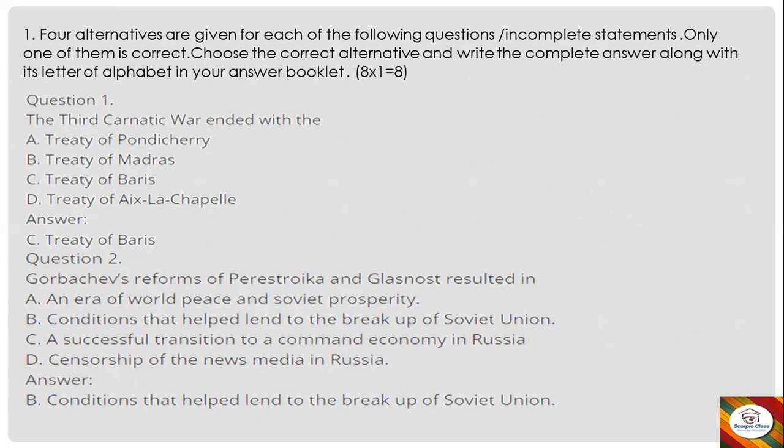The first section has multiple choice questions. Four alternatives are given for each question or incomplete statement; only one is correct. Choose the correct alternative and write the complete answer along with its letter of alphabet in your answer booklet. There are eight questions of one mark each.